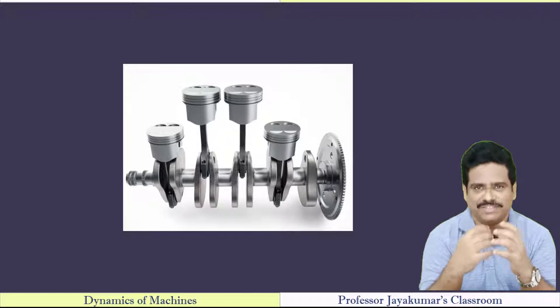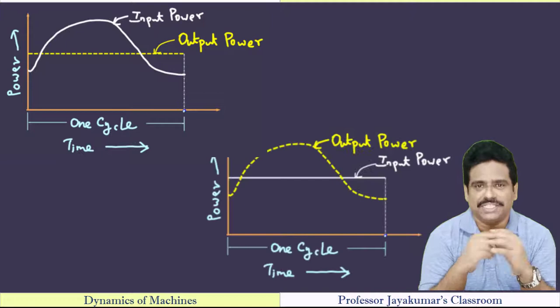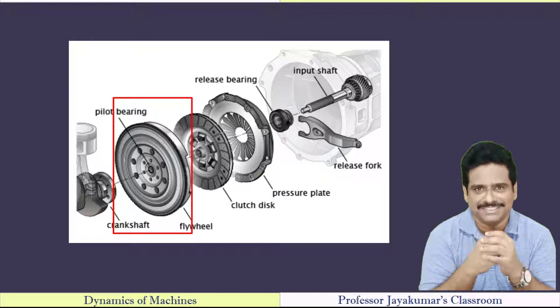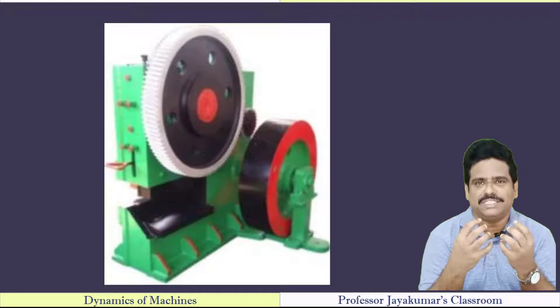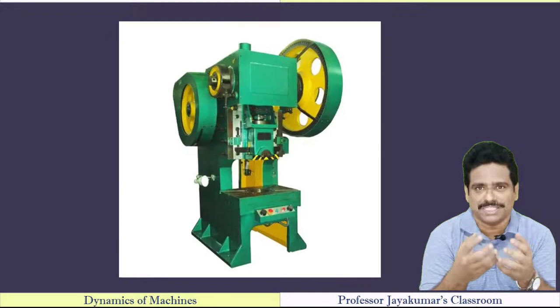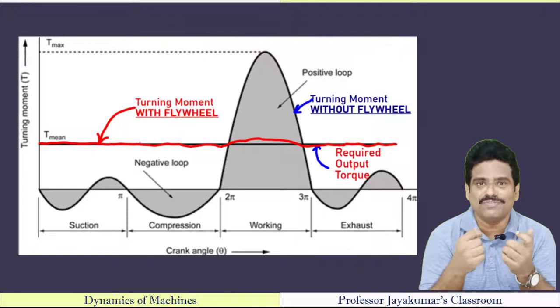In my previous video we presented an overview of the flywheel. We understood that wherever there is a fluctuation either in the power input or in the power output, we will be needing a flywheel. Flywheel stores energy in the form of kinetic energy, so more the fluctuation, bigger will be the flywheel. The capacity to store energy depends on its mass moment of inertia. For a given application, be it an IC engine or a punching press, we need to know how to do the flywheel design.